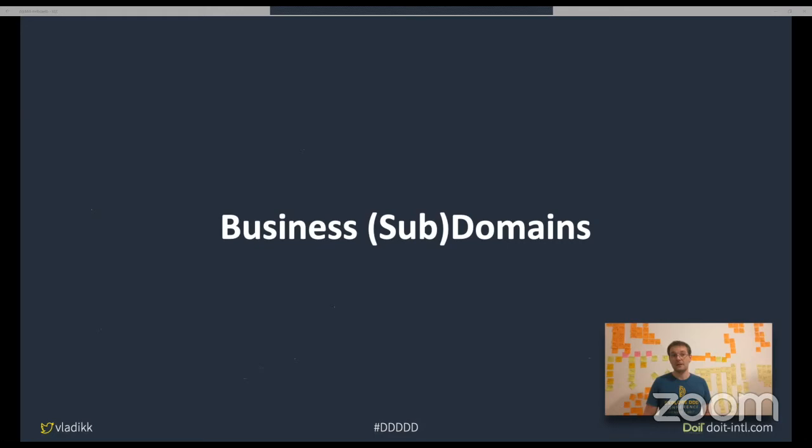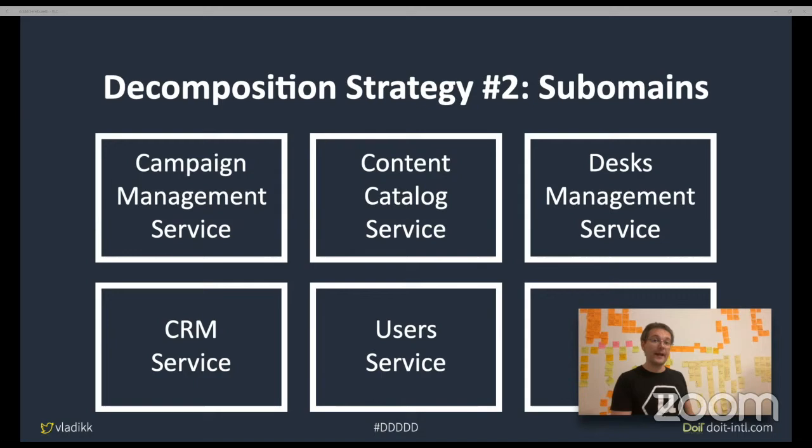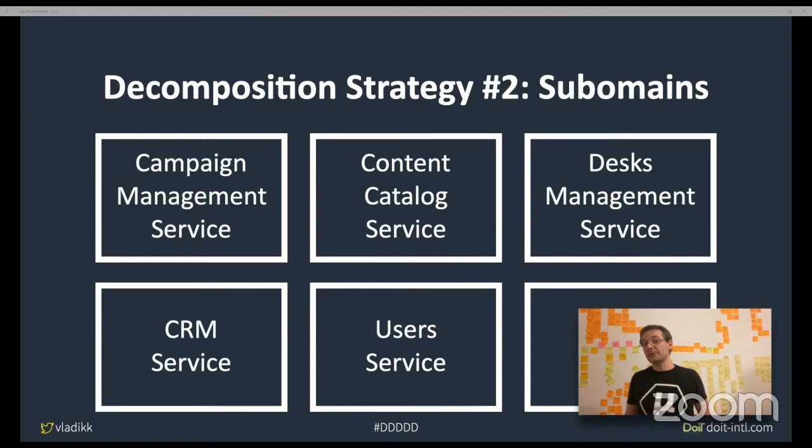However, these services represent pretty wide business areas. As long as there are no inconsistencies in the models, a bounded context can span multiple business subdomains. For example, in Marketing we have Creative Catalog, Contracts, and Campaign Management. In Sales we had CRM, Desks, Commissions, and other subdomains. We later used these business subdomains as physical boundaries for our services, dividing those wide bounded contexts into smaller ones — each representing one business subdomain. This approach is quite common in the DDD community, with many calling for a one-to-one relationship between subdomains and bounded contexts.